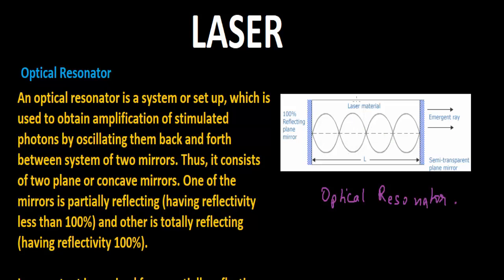One mirror may be partially reflecting where 90% of incident light is reflected and 10% transmitted. The transmitted portion is the final product where the laser emerges.